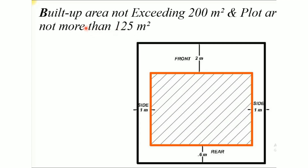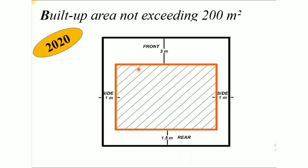In 2019 rules, build-up area not exceeding 200 m² and plot area not more than 125 m². Then we have 2 meters in the front, 2 meters on the sides, and 2 meters at the rear in this small plot case. In 2020, for a normal case, build-up period not exceeding 200 m² — it is 3 meters in the front, and the other side-wise and rear side remain the same.